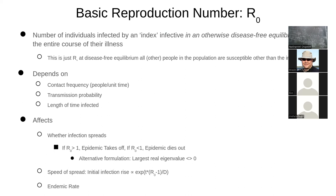If the basic reproductive number is greater than one, you're dealing with a situation where it could start to spread. If R0 equals two, before I recover I infect two people. Those two people could each infect two — four total. Those four could infect two each, becoming eight, and it grows geometrically at first, as long as they're contacting different susceptible people.